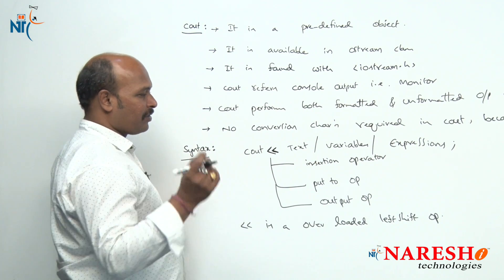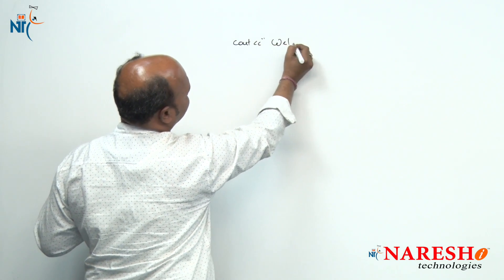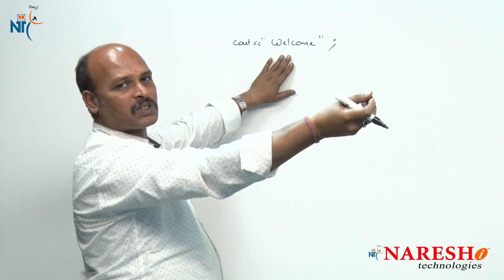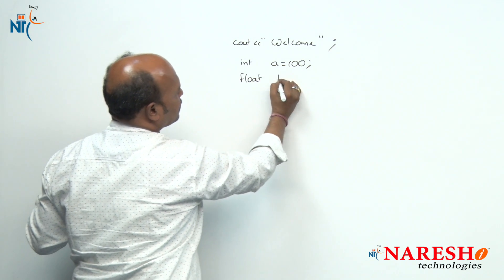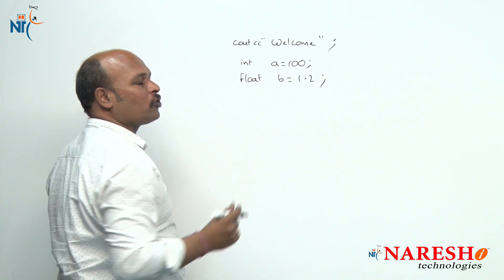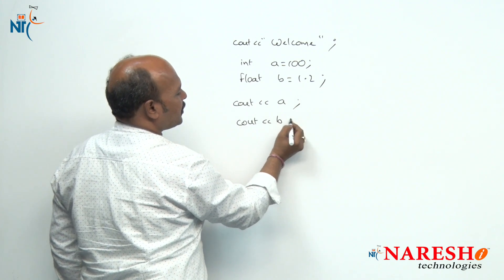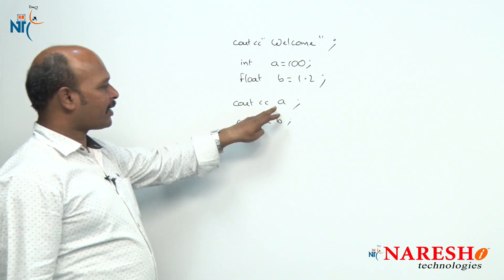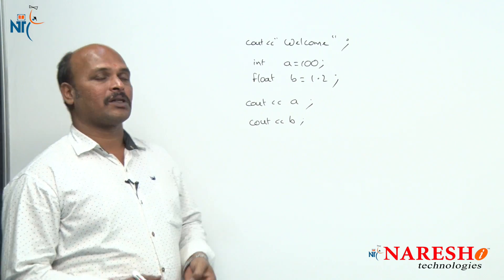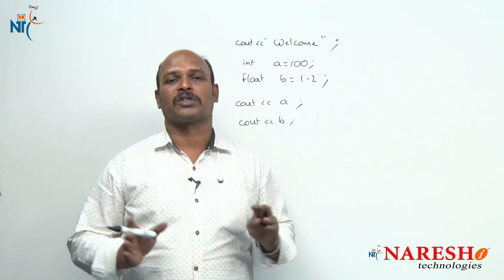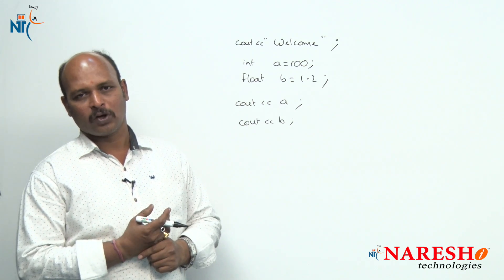For example, cout << "welcome"; will print 'welcome' on the screen. If we declare int A = 100 and float B = 1.2, we can write cout << A; and cout << B; directly — there are no conversion characters or format specifiers needed because implicit conversion handles the data types. In the next session we will discuss how cin works.